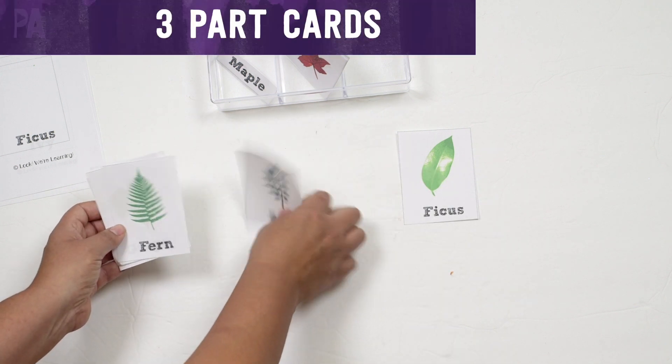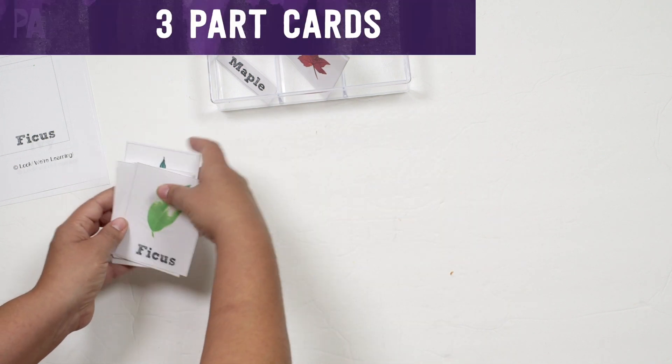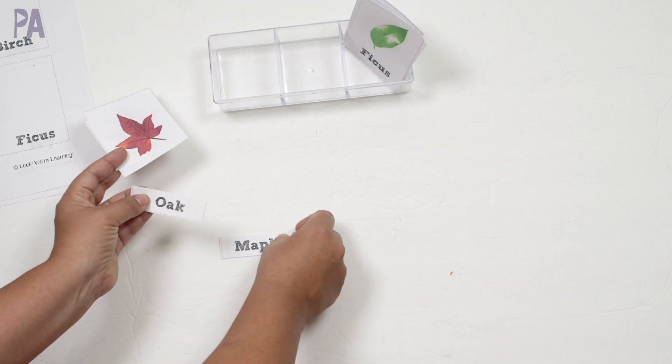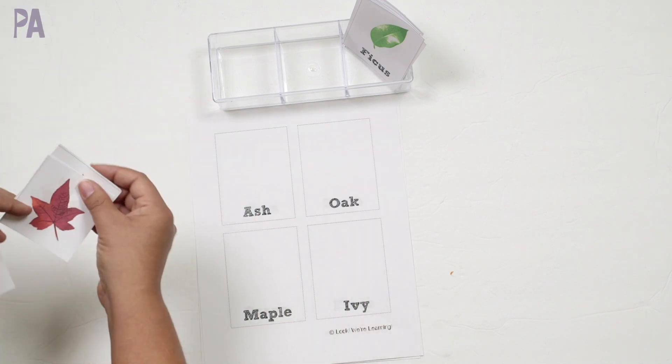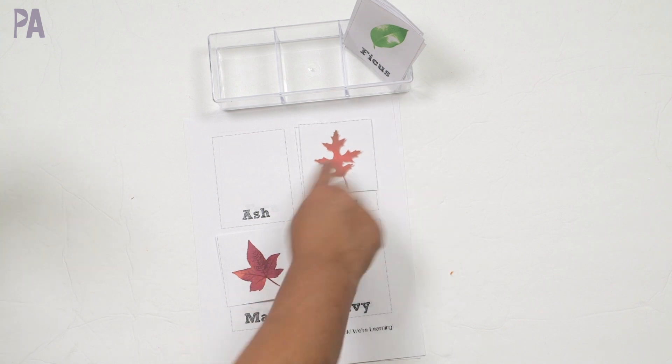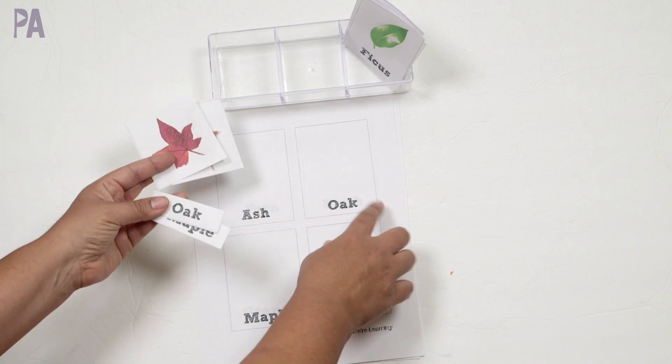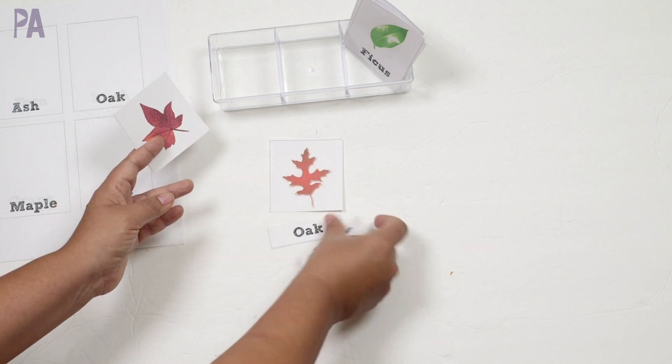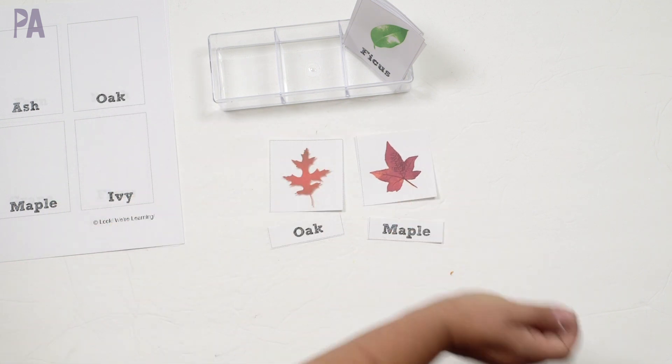Next is to use them like three-part cards. So I went ahead and cut some already. I just cut off the names here and then you can do a matching to the correct one. So we have a maple and we have an oak and just match them to the mats. You can not use the mats and then have them match just the labels. Match the labels right to them.